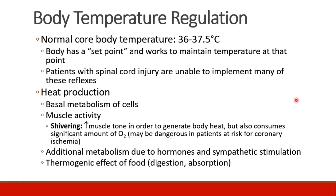How does your body produce heat? The basal metabolism of cells generates heat. Muscle activity generates heat, and if you don't have muscle activity, the body will start to shiver and increase muscle tone to generate heat. However, shivering also consumes quite a lot of oxygen, which could be dangerous in patients who have coronary ischemia or are at risk for it, and whose oxygen supply versus demand needs to be kept carefully in balance. The body can also create heat through metabolism associated with hormones or sympathetic stimulation, and digestion and absorption of food also has a thermogenic effect.